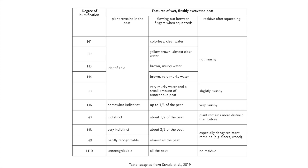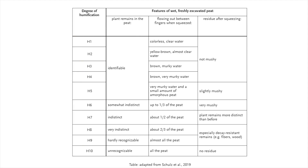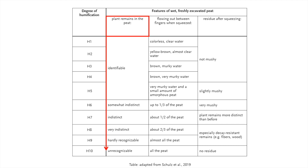In order to determine the von Post degree of humification, in Germany a table from the soil mapping guidelines is used, translated by Schultz and colleagues. For each sample, a score can be allocated between H1 (undecomposed) and H10 (completely decomposed). For this, three attributes are used. First, you need to observe what exactly flows out between the fingers when the sample is squeezed. Second, the consistency and composition of the sample residue is assessed. Third, the recognizability of plant remains in the peat should be observed. This attribute should not be examined before the sample is squeezed, but rather in the sample residue after squeezing. This column should therefore be moved to the right.